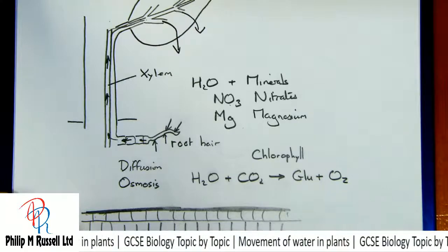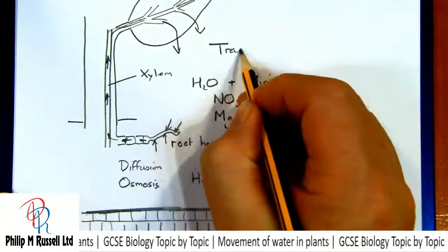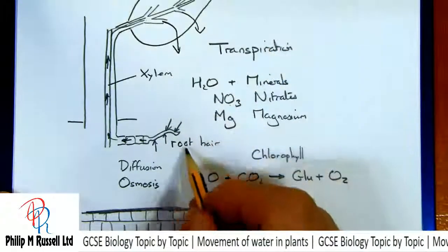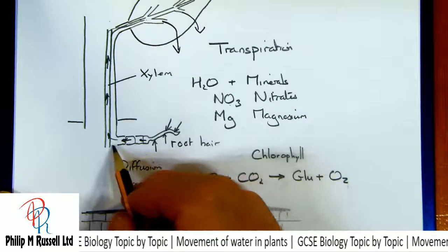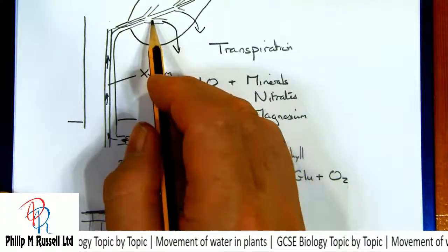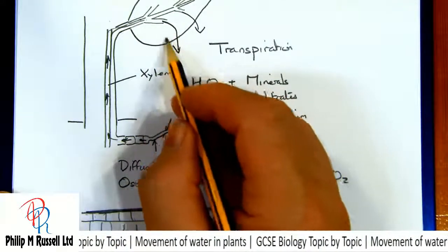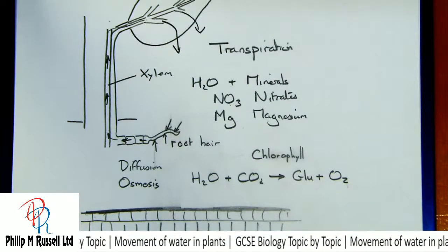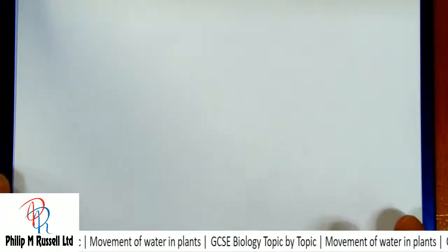We need to bring up some of these minerals and we do that by constantly moving water up. As we constantly move the water up, more water enters the plant, taking with it anything dissolved in the soil such as nitrates, magnesium and various other things. So we've got this process in plants which we're going to call transpiration.